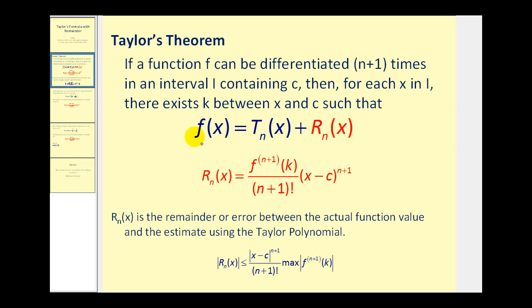The idea behind Taylor's theorem is that the true function value equals the Taylor polynomial approximation plus some remainder, which can also be considered the error between the actual function value and the Taylor polynomial. The function must be able to be differentiated n plus one times in an interval containing c, where c is where the Taylor polynomial is centered. For each x in the interval, there must exist some k between x and c. We can determine the remainder or error using this formula: the n plus one-th derivative of f evaluated at k, divided by n plus one factorial, times x minus c to the power of n plus one.